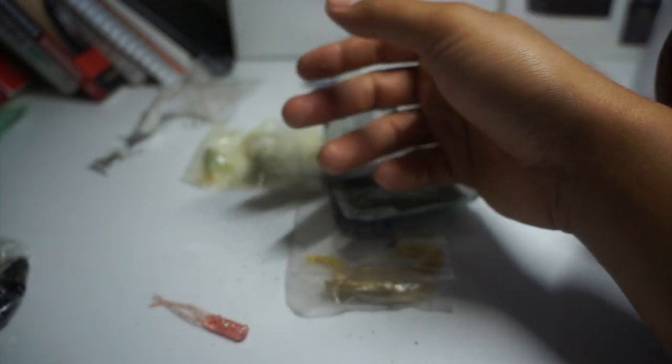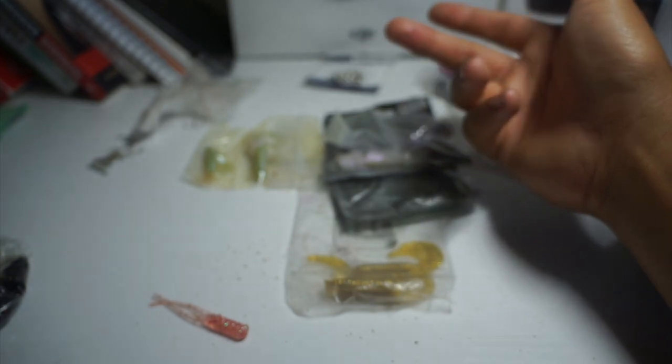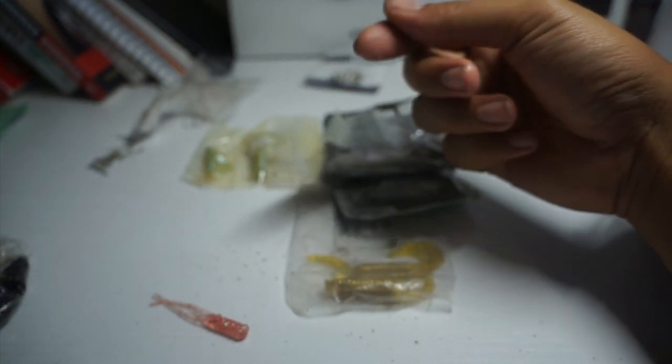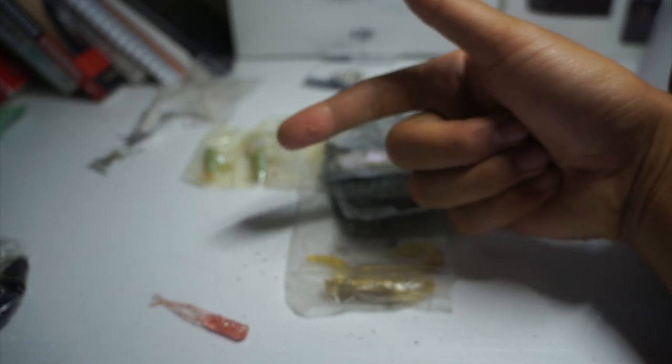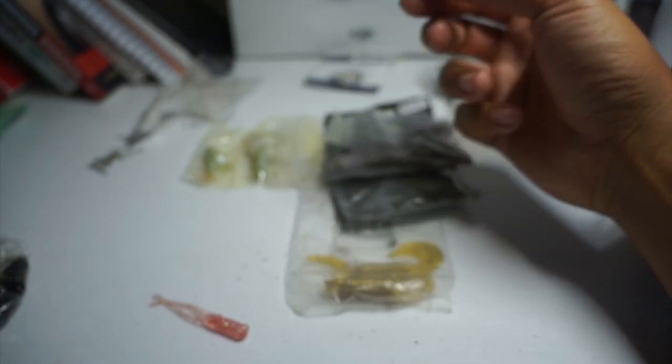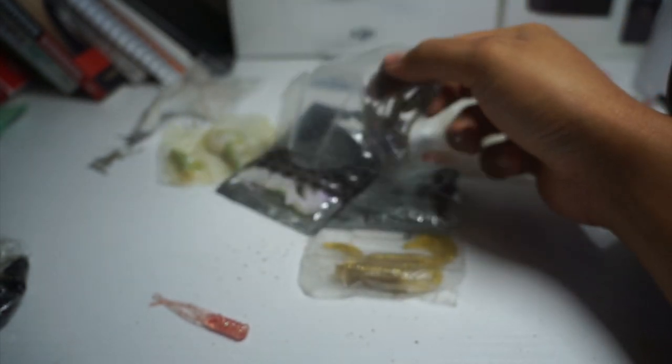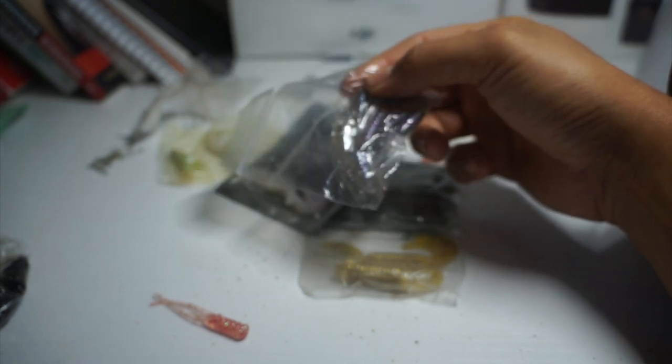Yeah, any type of grub will work. Just anything that's going to attract fish obviously to your hook. It's the main reason why the fish are going to bite your hook. You can also use strips of ika, tako, anything else, but grubs are the go-to because they're pretty cheap and they're just cool to have.